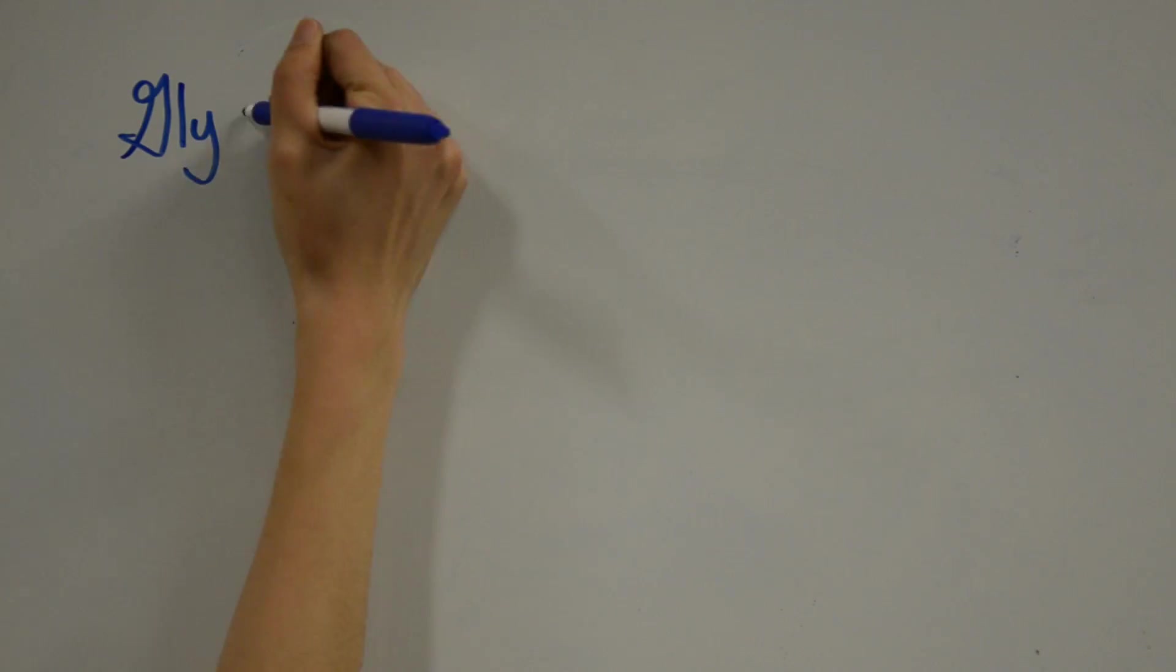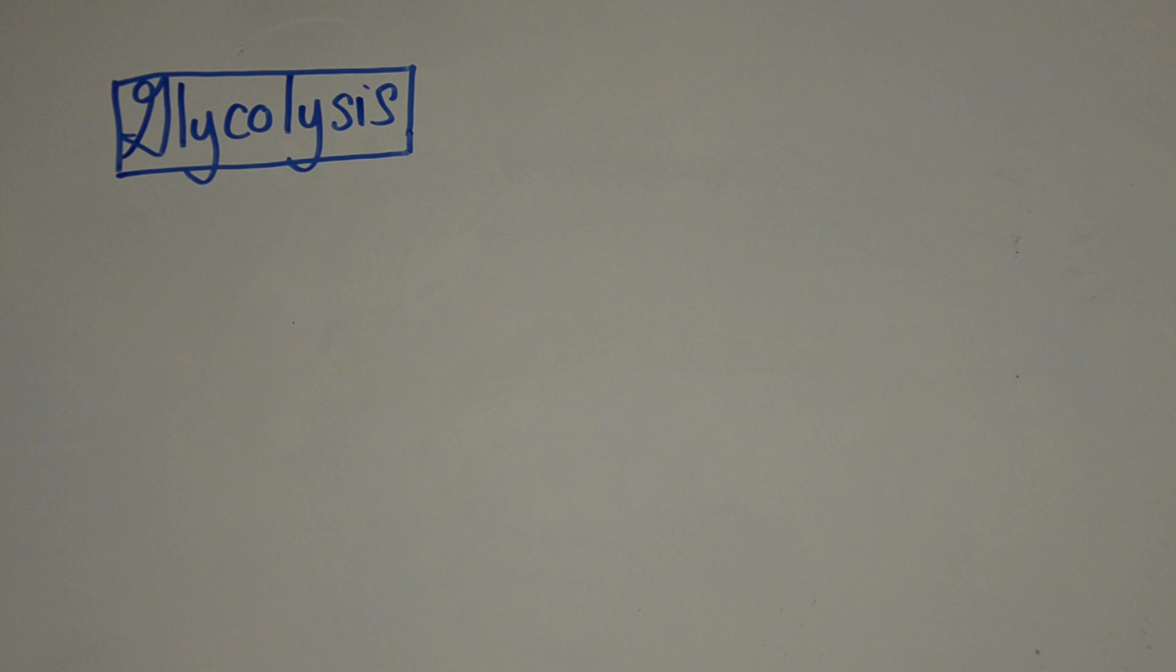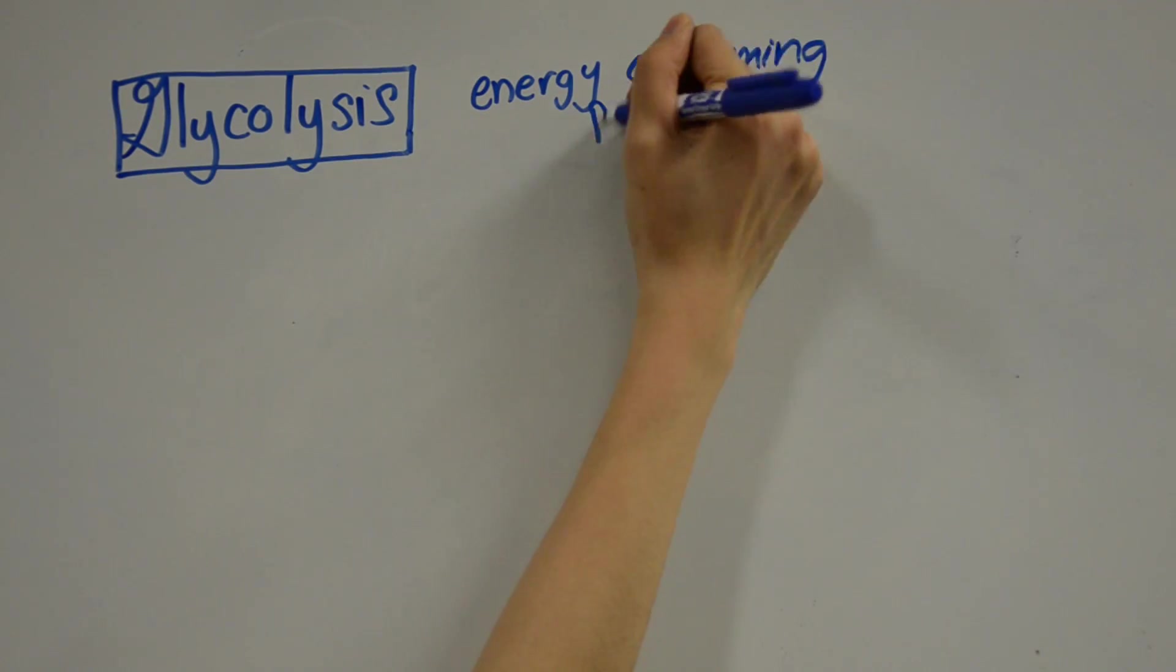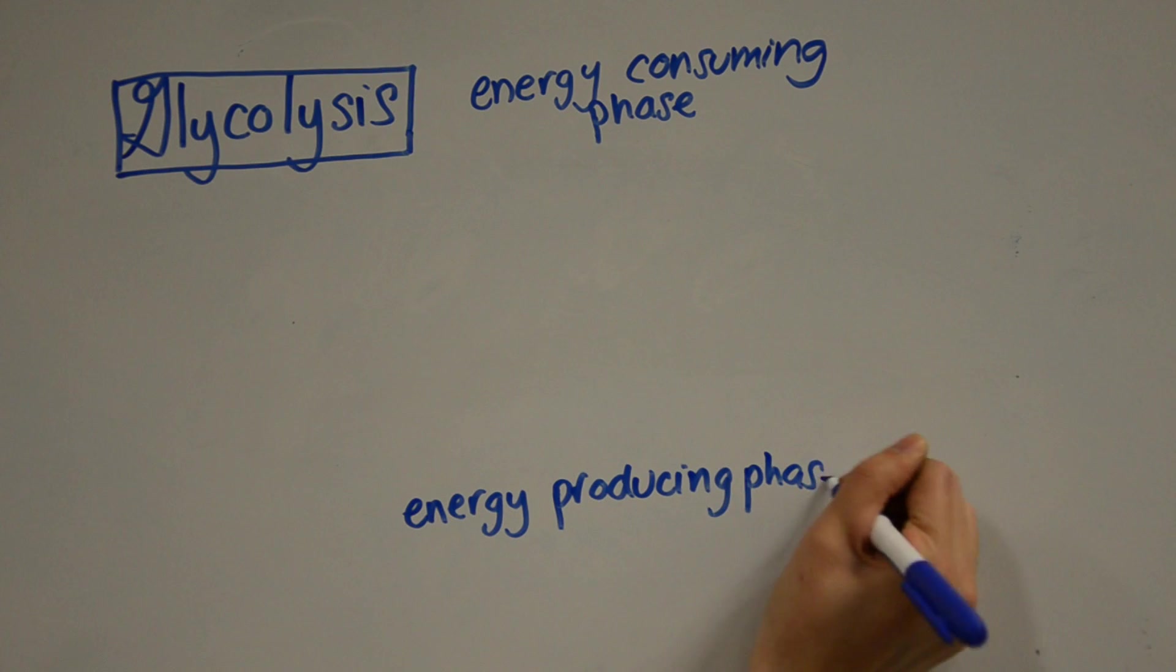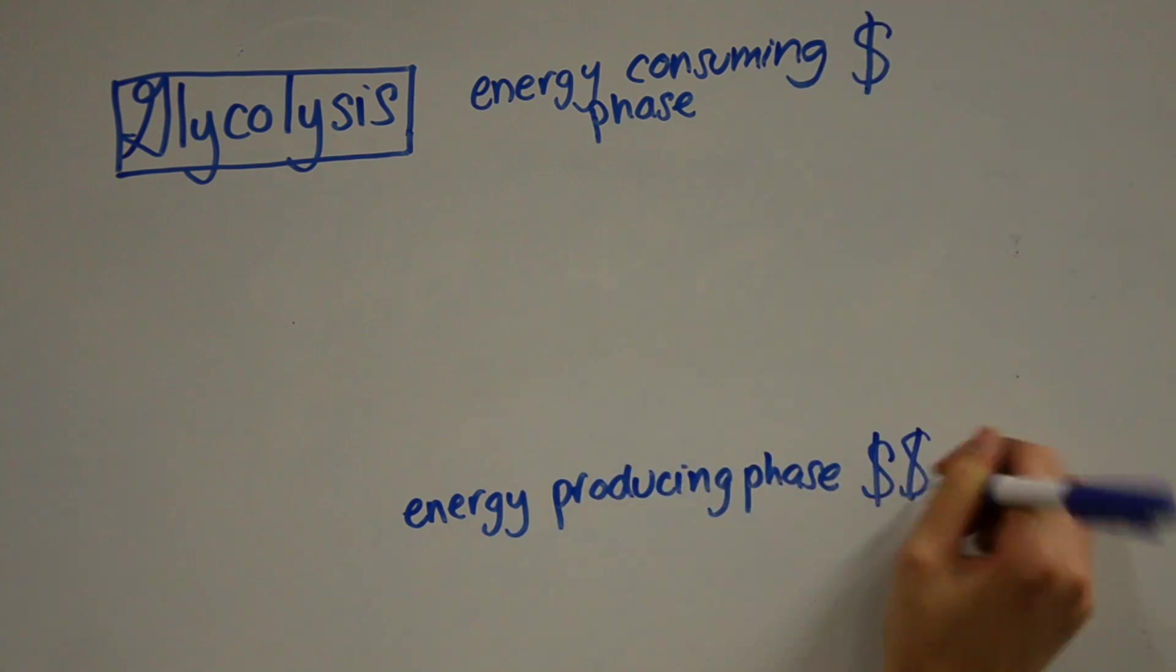The first step is glycolysis or the breakdown of glucose. The purpose of glycolysis is to break down the glucose molecule into two three-carbon molecules of pyruvate. It involves two phases, the energy consuming phase and the energy producing phase. It's kind of like how you need to invest money to make more money.